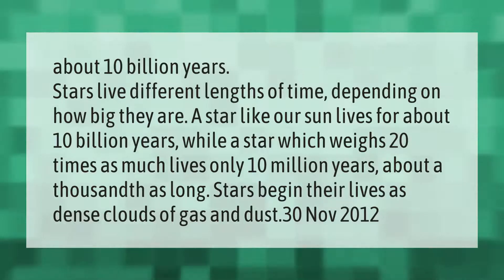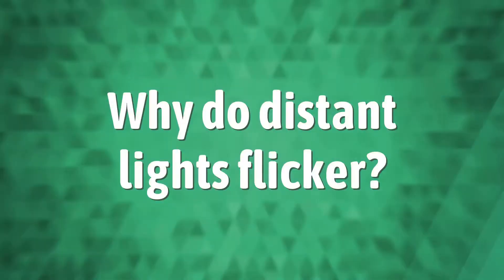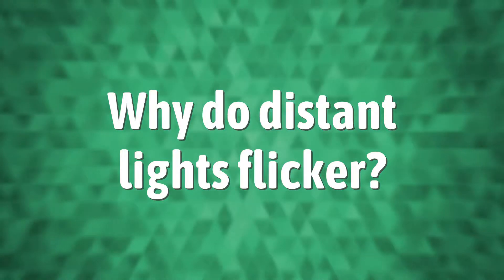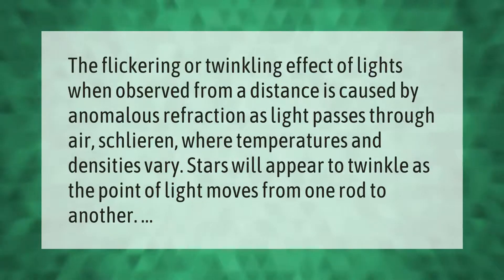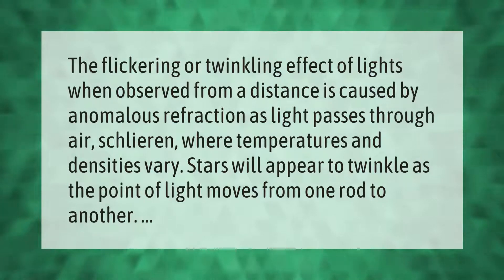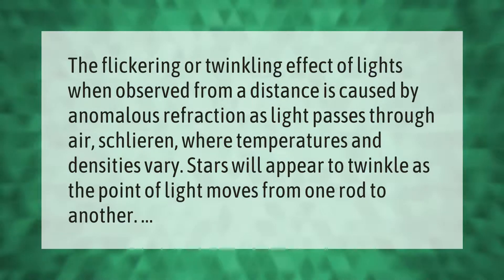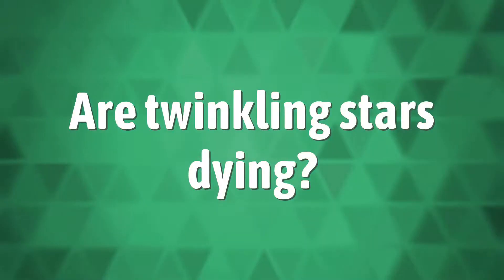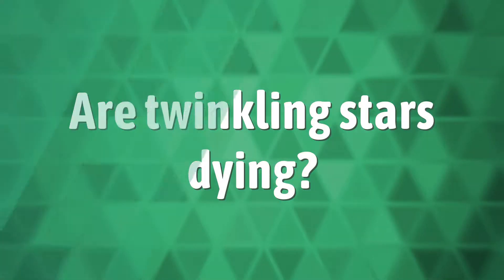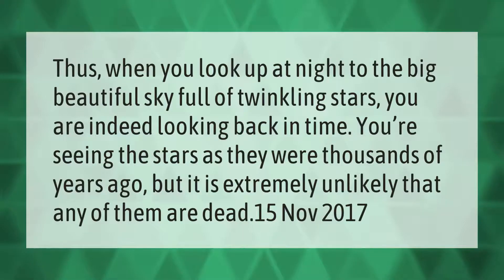The flickering or twinkling effect of lights when observed from a distance is caused by anomalous refraction as light passes through air schlieren, where temperatures and densities vary. Stars will appear to twinkle as the point of light moves from one region to another.